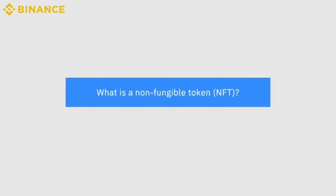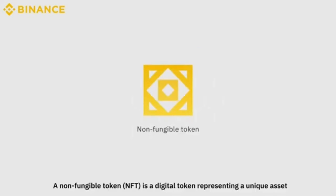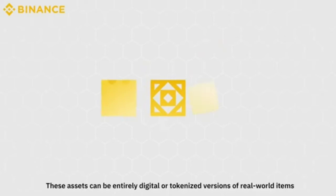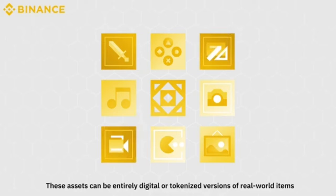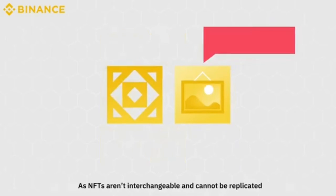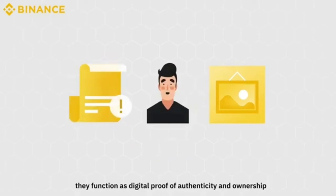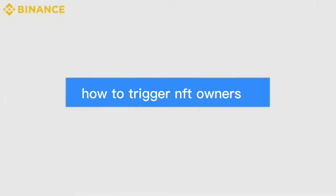What is a non-fungible token? A non-fungible token is a digital token representing a unique asset. These assets can be entirely digital or tokenized versions of real world items. As NFTs aren't interchangeable and cannot be replicated, they function as digital proof of authenticity and ownership.